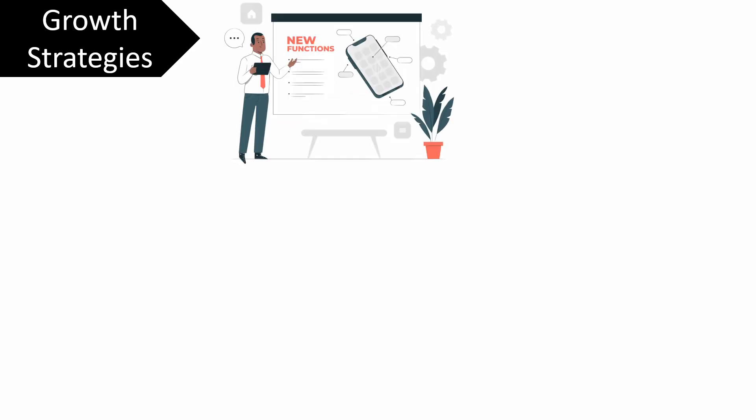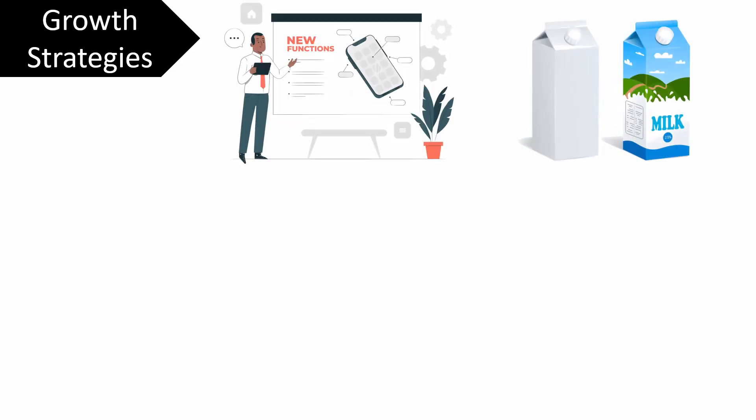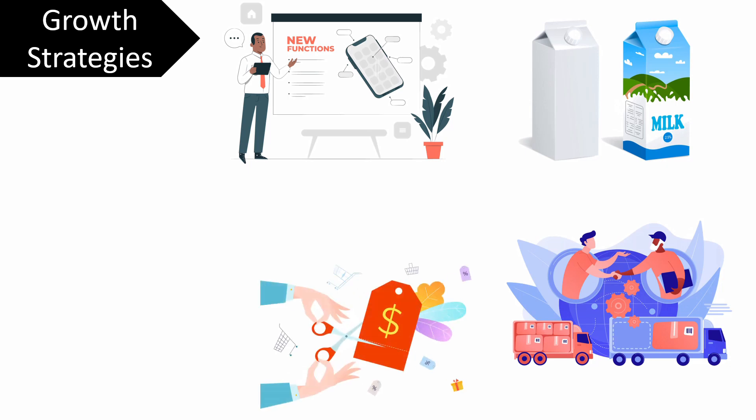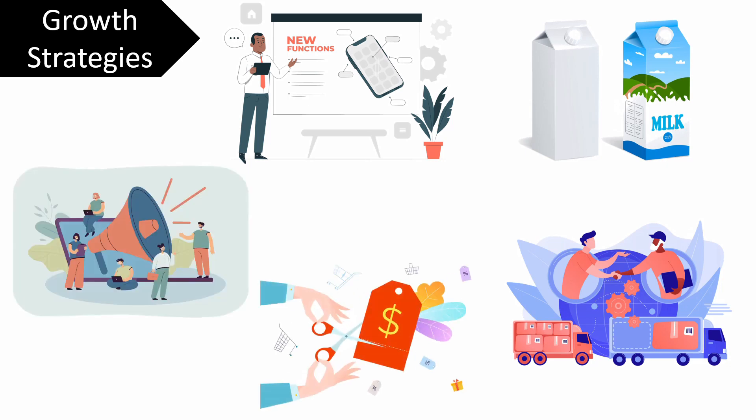The different strategies which are implemented by the companies at the growth stage include addition of new features, changing style, selecting new channels of distribution, reduction in price and increasing promotion.